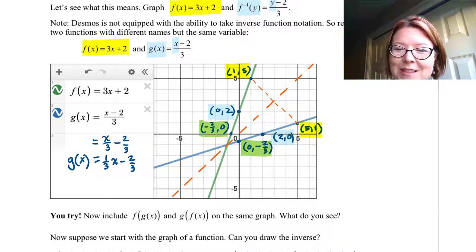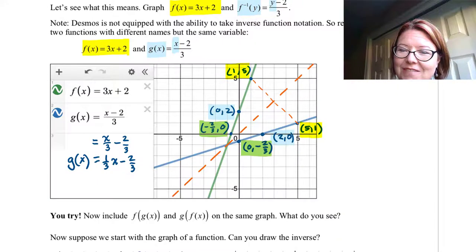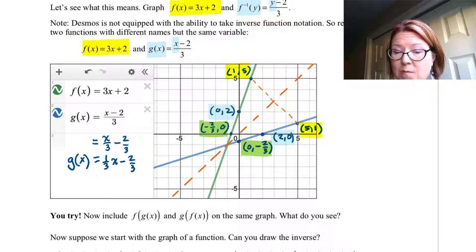Before we move on, I have something for you to try. Put these two functions, f(x) and g(x), into your Desmos calculator. And then in the line below that, find f of g of x. Just type it in exactly like that. And then on the line below that, do g of f of x and see what happens. Pause the video and give it a try.